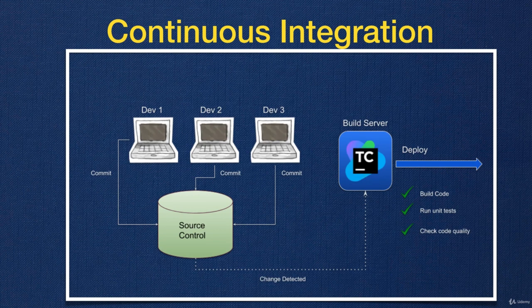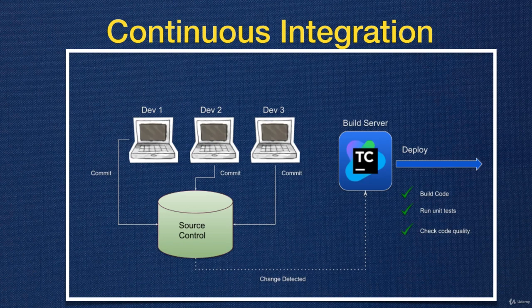In continuous integration, as developers make changes, the CI tool — which in our case is TeamCity — detects those changes, compiles the code, and creates a package. We can then deploy that package to different environments. We also have the option to run unit tests automatically and check code quality, as we will see later in the course.